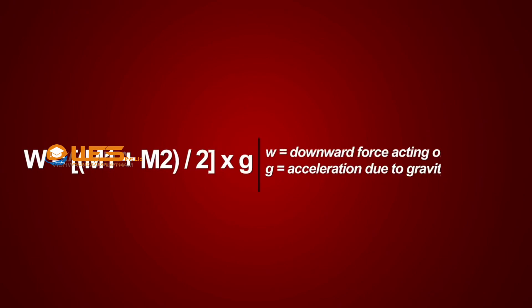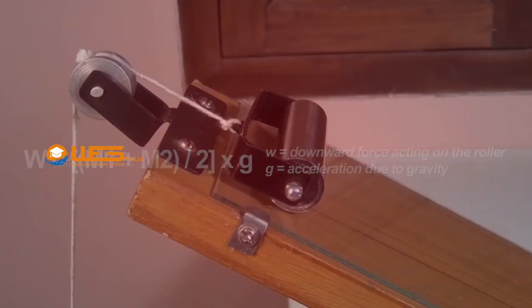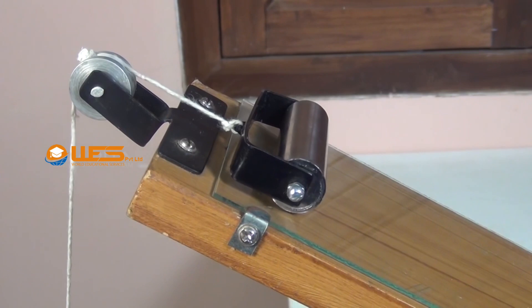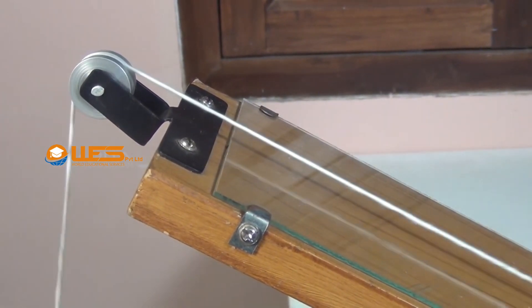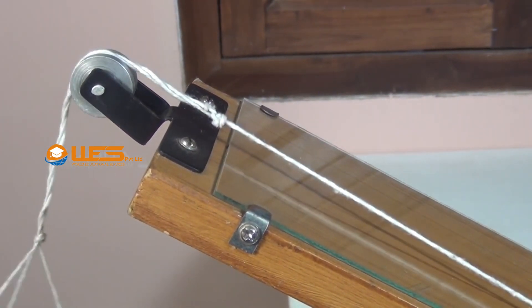The mean value of m1 and m2 multiplied with acceleration due to gravity gives the downward force w acting on the roller of mass m. Repeat the same procedure for upward and downward movements of the roller for different angles of inclination.